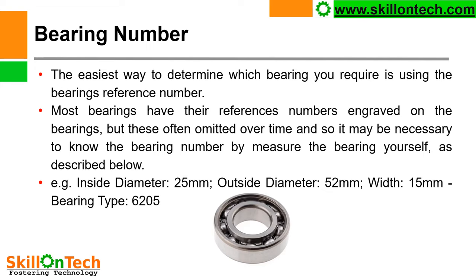For example, suppose a bearing has inside diameter 25 mm, outside diameter 52 mm, and width 15 mm — it means the bearing is 6205 ball bearing. A sketch of a deep groove ball bearing is shown for your reference.